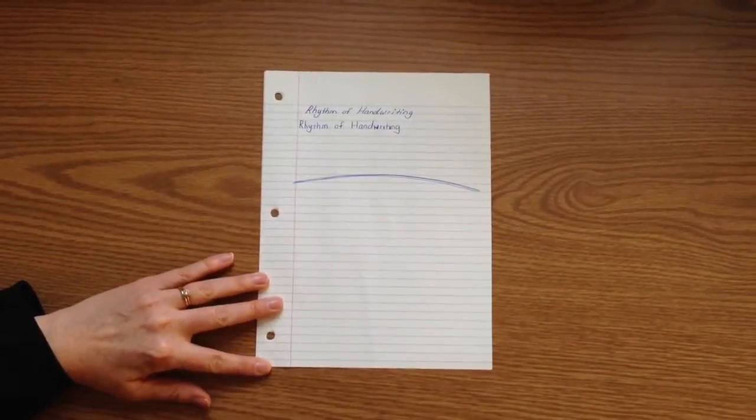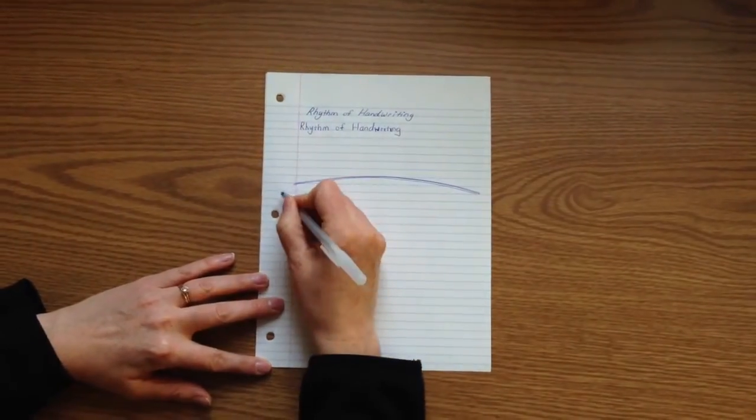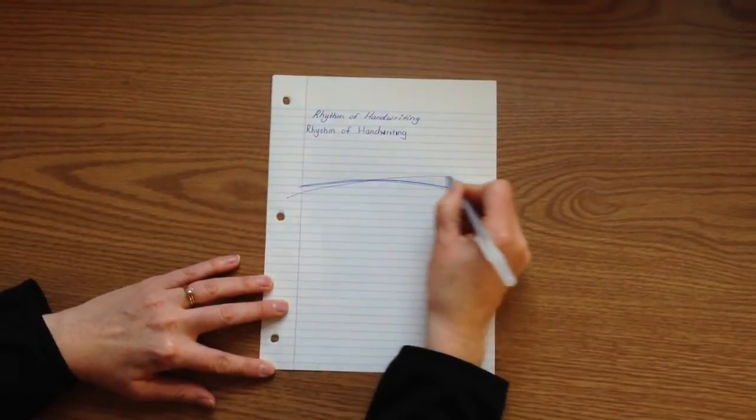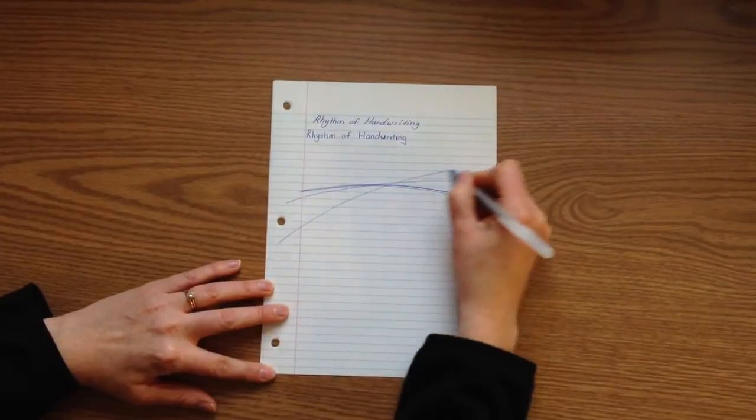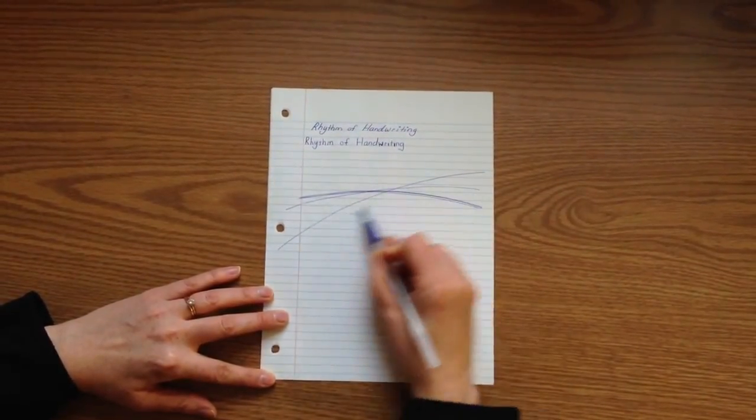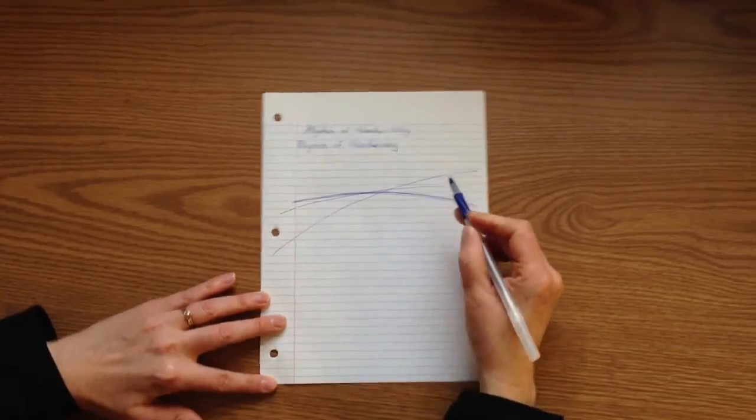When we turn the page to be oriented straight on the table and try to do this same experiment and write with a motion just from our elbow, you'll notice that this line naturally goes diagonal across the page.